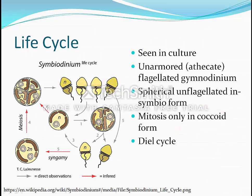The observations of Symbiodinium's life cycle were mostly from cultured organisms taken out of their coral host. There are two primary forms and both are unarmored or athecate. There is a motile flagellated gymnodinium or bilobed cell that is used for dispersal and quick infection of the host cell. The primary form for mitosis and symbiosis is the coccoid cell seen here, which results when the gymnodinoid cell undergoes a quick transformation, loses its flagella, and turns into this circular cell. The non-motile form is the only form that performs mitosis, which is quite different than most dinoflagellate species.